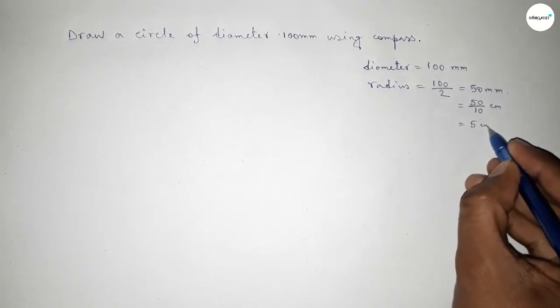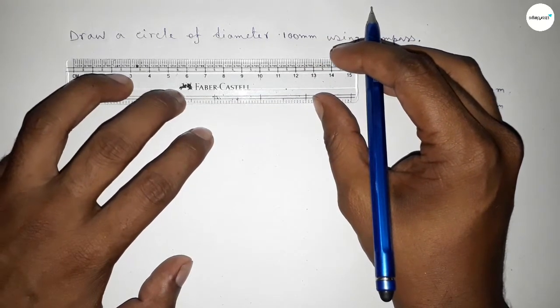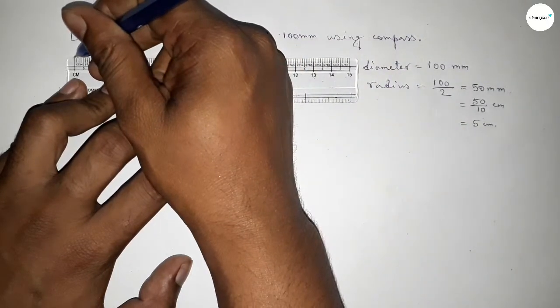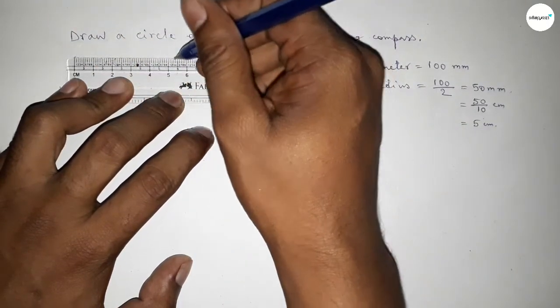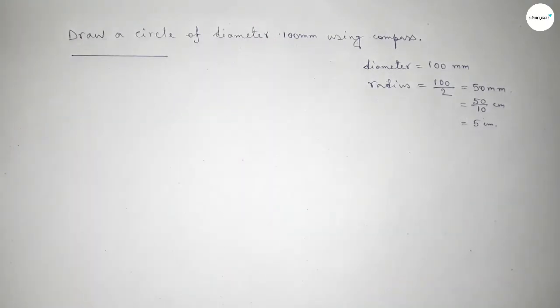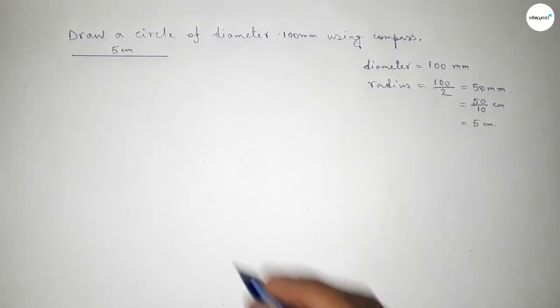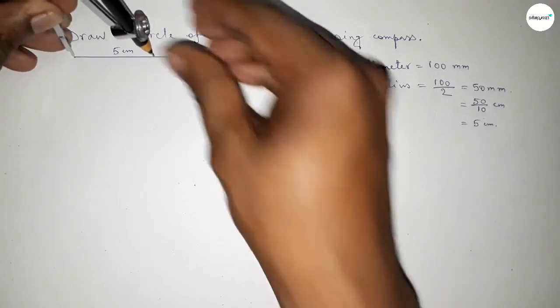Now first we have to draw a line of length 5 centimeter. This is the 5 centimeter line. Now taking any point and taking the length 5 centimeter by using compass.